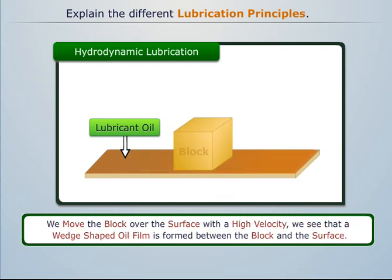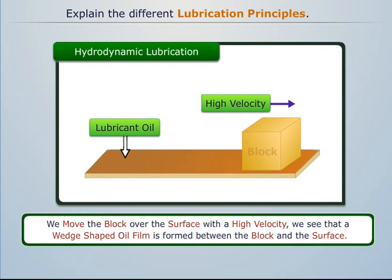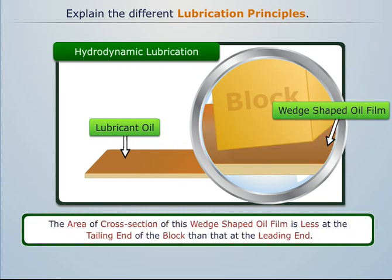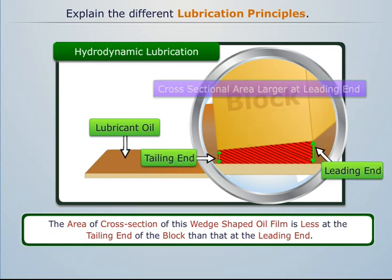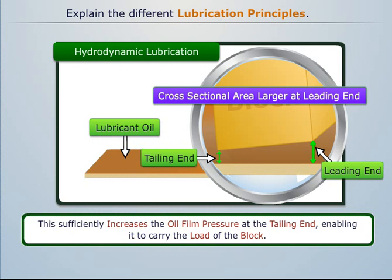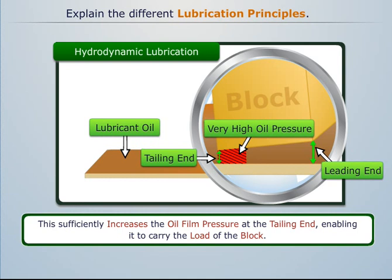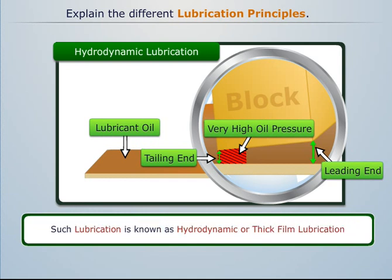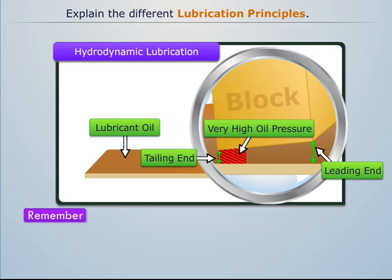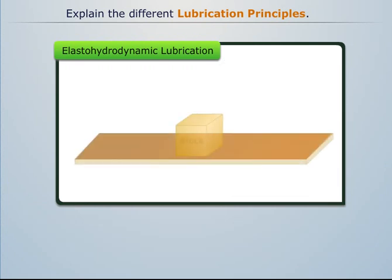If we move the block over the surface with a high velocity, we see that a wedge-shaped oil film is formed between the block and the surface. The area of cross-section of this wedge-shaped oil film is less at the tailing end of the block than at the leading end. This sufficiently increases the oil film pressure at the tailing end, enabling it to carry the load of the block. Such lubrication is known as hydrodynamic or thick film lubrication, where the load-bearing capacity of the oil film increases with increase in velocity of the block.